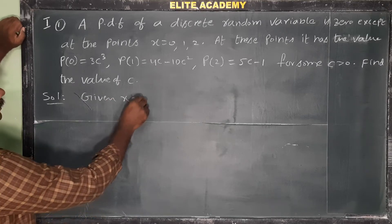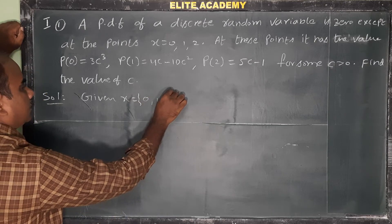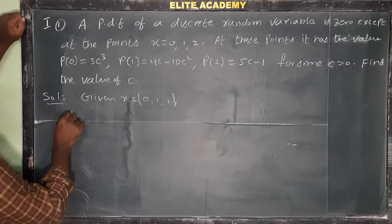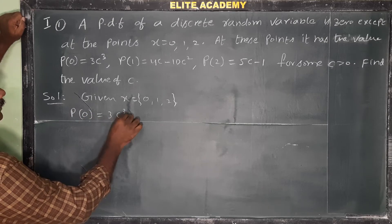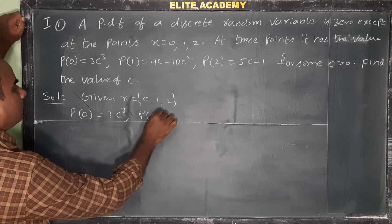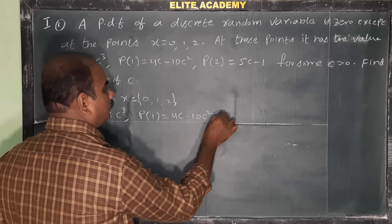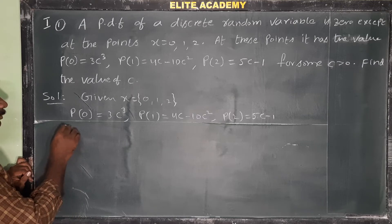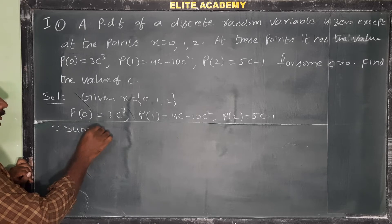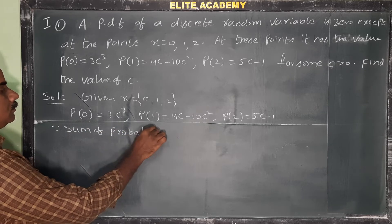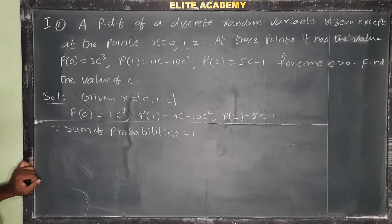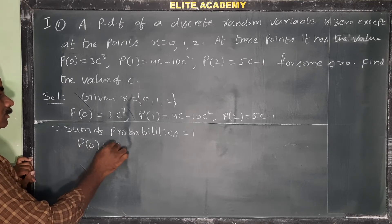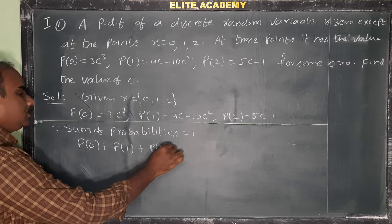Given: the random variable X takes values 0, 1, 2 — so there are three random variables. We know that the sum of all probabilities must equal one. Therefore, P(0) + P(1) + P(2) = 1.